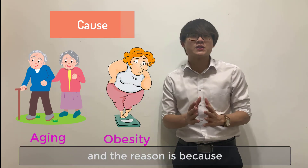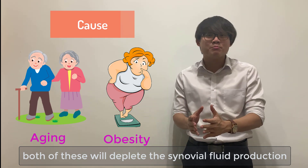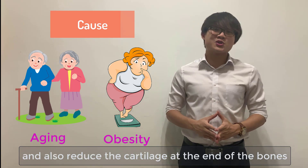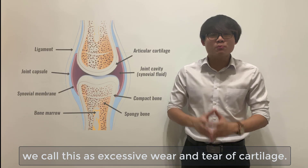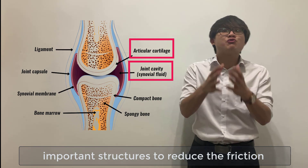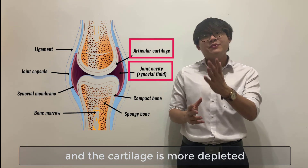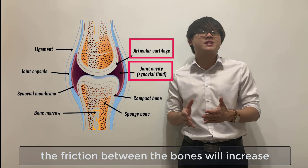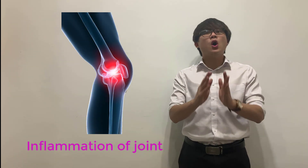Both of these will deplete the synovial fluid production and also reduce the cartilage at the end of the bones. We call this excessive wear and tear of cartilage. Both synovial fluid and cartilage are important structures to reduce friction between the bones during movement. As synovial fluid production decreases and the cartilage is more depleted, the friction between the bones will increase during movement, and thus this will lead to inflammation of the joint.